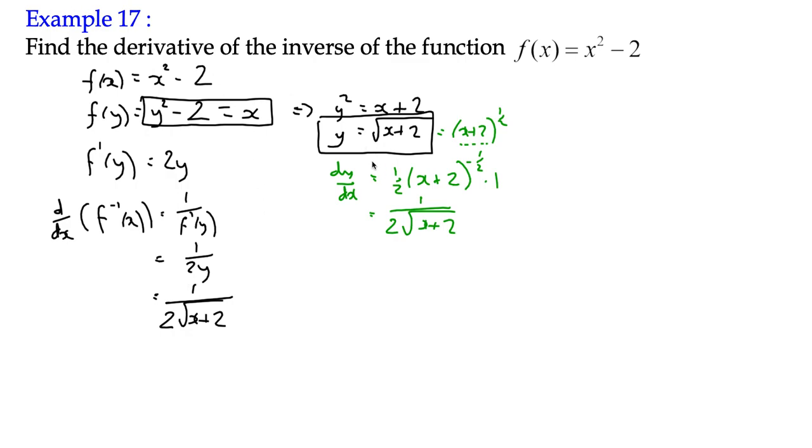But all we can do is say that it's 1 over 2 times the square root of x plus 2. And what we've not had to do is to do this bit here. Because we're going to come across functions that we can't actually differentiate. So we can take a wee u-turn. We go back to f of y, differentiate it, and then use this arrangement here in order to find the derivative. So that's the theory behind it.